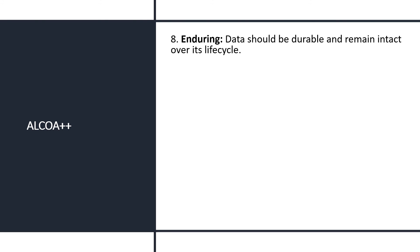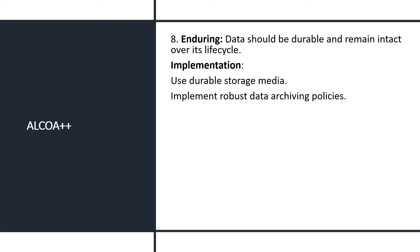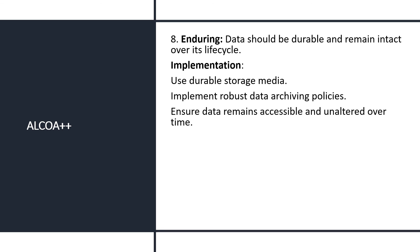The eighth attribute is Enduring. Enduring means data should be durable and remain intact over its life cycle — durability of data should be ensured and verified throughout. For implementation: use durable storage media such as laboratory notebooks, test data sheets, or permanent storage media for automated systems, with data backups ensured. Implement robust data archiving policies so that when storage is full, an archival process is available. Ensure data remains accessible and unaltered over time throughout the data life cycle.